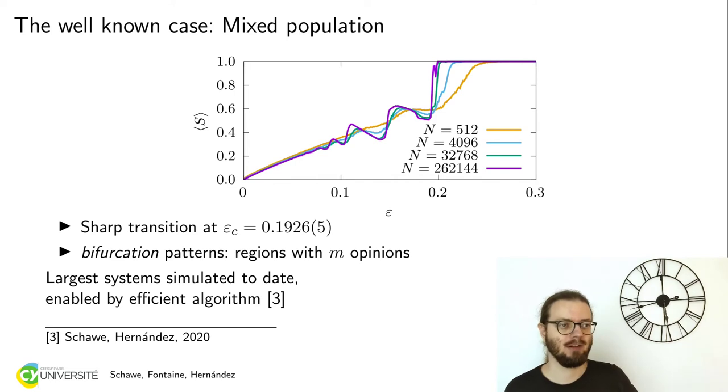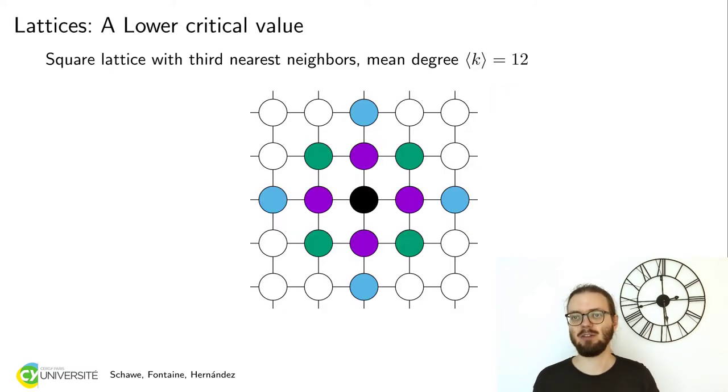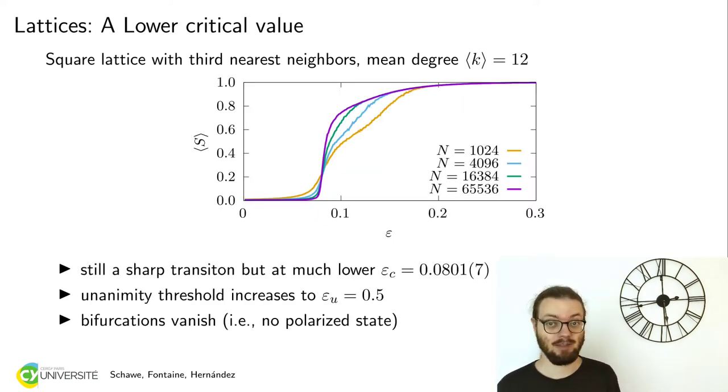What happens if we restrict the topology? Let's look at the lattice. We choose the square lattice, but not only the next neighbors, not only the violet ones here, but every neighbors which are colored here. Those are up to 13 nearest neighbors. So each node has 12 neighbors instead of four.